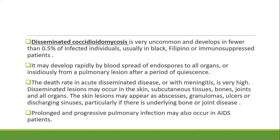Dissemination develops rapidly by blood spread of endospores to all organs, or insidiously from pulmonary lesions after a period of quiescence. The death rate in acute disseminated disease or with meningitis is very high. Disseminated lesions occur in skin, subcutaneous tissue, bone, joints, and all other organs. Skin lesions appear as abscesses, granulomas, ulcers, and discharging sinuses, with involvement of underlying bone and joints. Prolonged progressive pulmonary infection also occurs in AIDS patients.